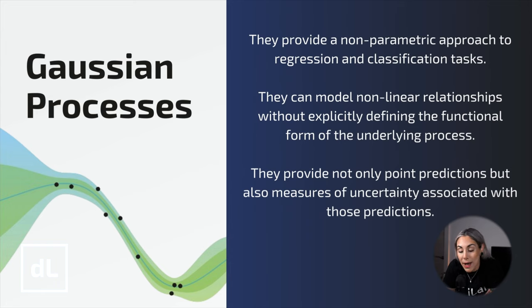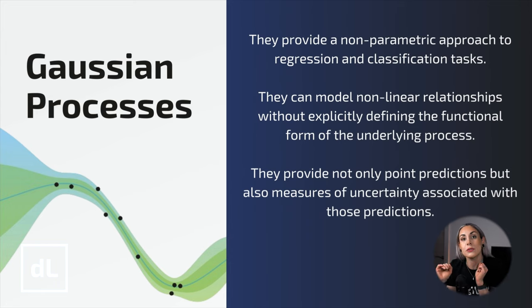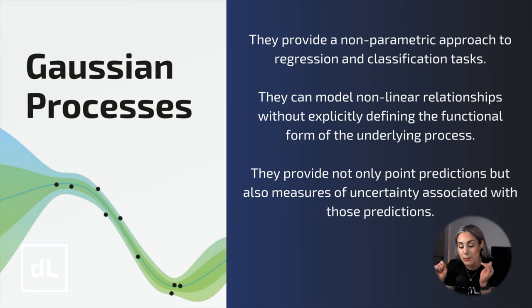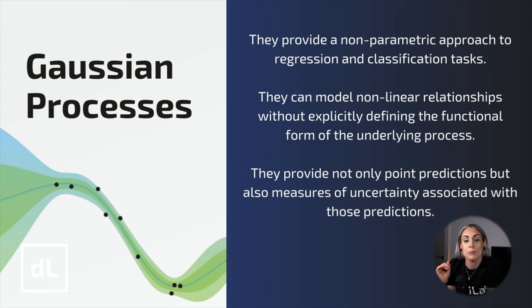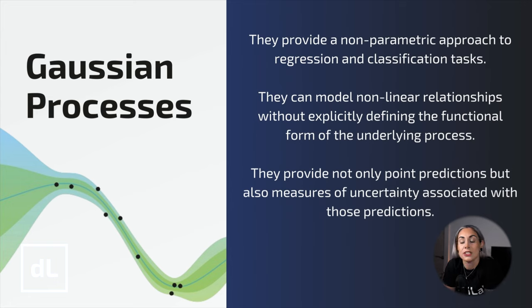Let's do a quick recap from the previous video. In part 1 of the series, we introduced Gaussian processes, a powerful framework for probabilistic modeling. We discussed how Gaussian processes provide a non-parametric approach to regression and classification tasks. Unlike traditional parametric models, Gaussian processes offer a more flexible alternative — rather than specifying a fixed set of parameters, they define a distribution over functions, enabling them to adapt to the complexity of the data. Gaussian processes provide not only point predictions, but also measures of uncertainty, which is crucial in decision-making processes.